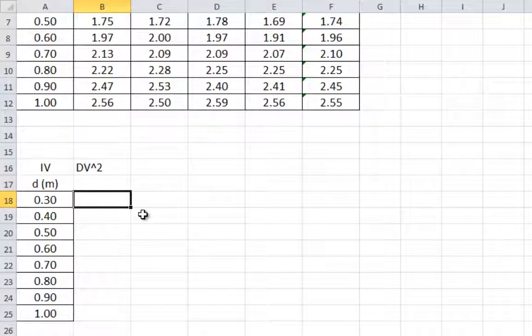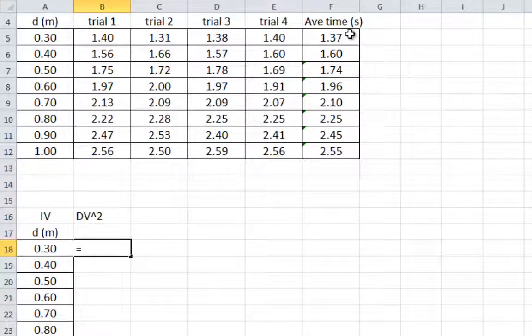We're going to have DV squared. You put your cursor where you want it. You hit equals. You click on the number you want, 1.37. Then you hit the arrow button above the 6 and you put in a 2 for square. That tells Excel to square 1.37. Hit enter.